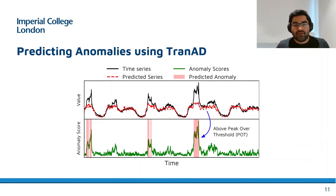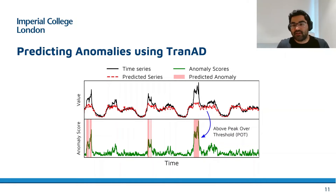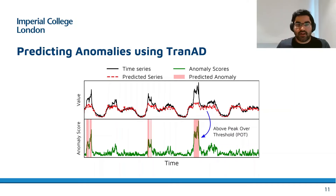Now that we have a transformer model that can precisely reconstruct an input local contextual window by utilizing the complete sequence as well as the deviations from an approximate reconstruction as per the two-phase procedure, let me describe how we generate anomaly labels.